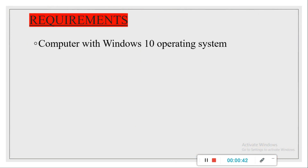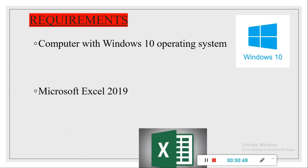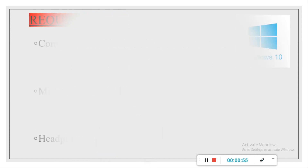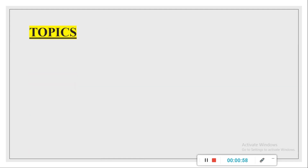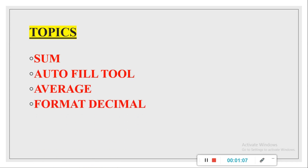The first requirement is a computer with Windows 10 operating system, the second requirement is Microsoft Excel 2019, and the third and final requirement is headphones. The topics we are going to cover in this lesson are: SUM, Autofill Tool, Average, Format Decimal, MAX, and MIN.